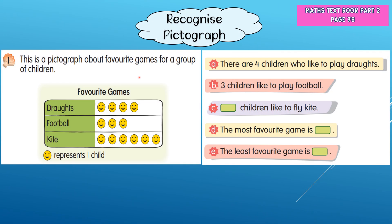Now we will learn about pictographs. A pictograph is a representation of data using images or symbols. This is a pictograph about favorite games for a group of children. There are three games: draughts, football, and kite. A smiley image is used as the symbol, and one smiley represents one child.